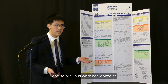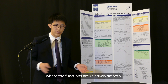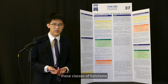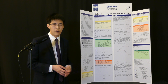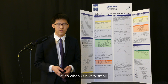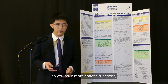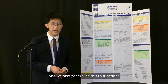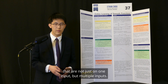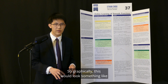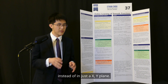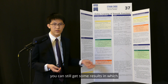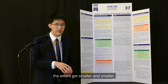Previous work has looked at especially large values of q, where the functions are relatively smooth. In this case, they've shown that it's pretty easy to learn these classes of functions with reasonable, simple algorithms. Our work extends this by showing that even when q is very small — so you have more chaotic functions — you can still learn very well, and the error terms will still decrease pretty quickly. We also generalize this to functions that are not just on one input, but multiple inputs. So graphically, this would look something like a 3D space with a curve, instead of just an xy plane. And we've shown that in this case, you can still get results in which the errors get smaller and smaller.